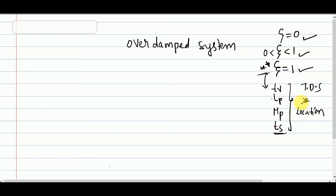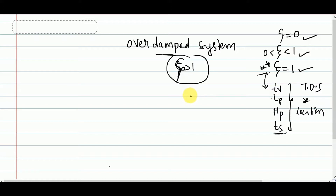So in this video, after deriving the poles for an over-damped system — that is for zeta greater than 1 — I am going to locate the poles of this over-damped system and then explain the difference in pole locations across various cases. For each case, the poles lie at certain positions on the real axis and the imaginary axis.